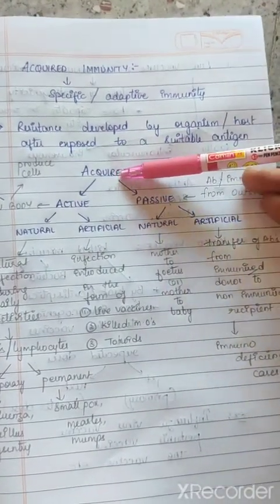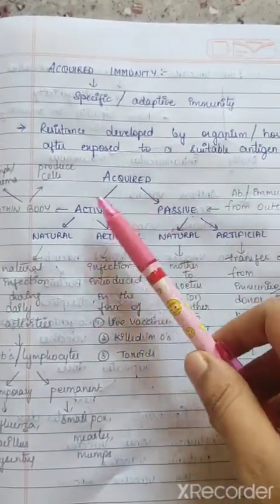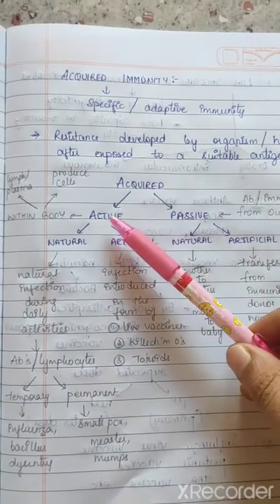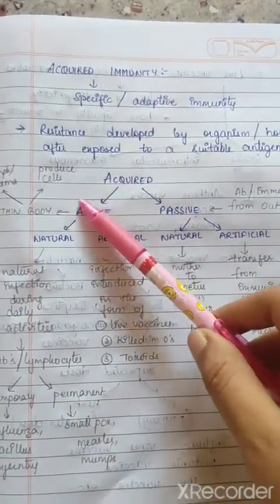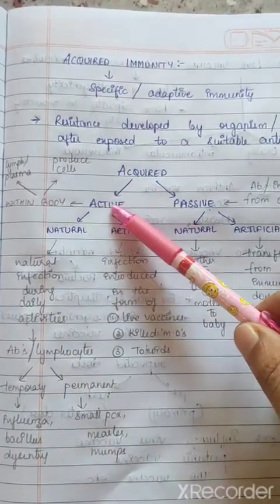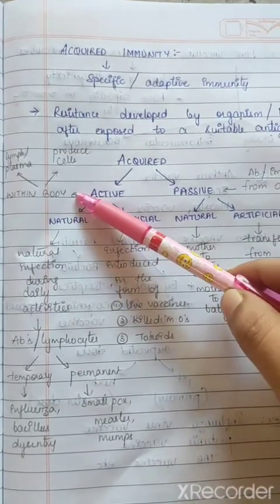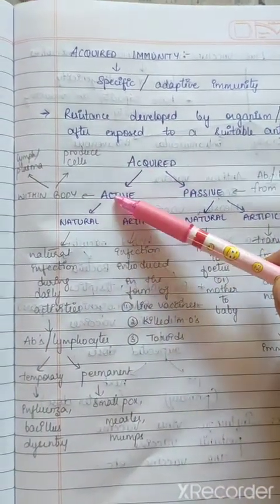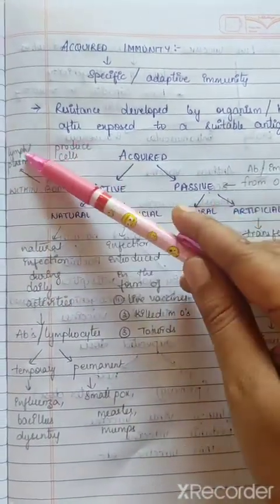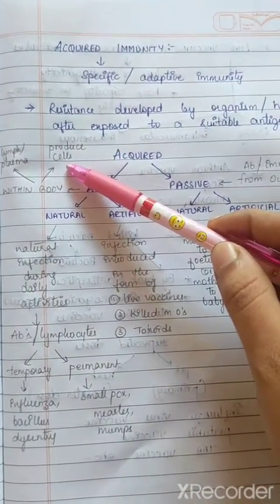Acquired immunity is of two types: active acquired immunity and passive acquired immunity. Active acquired immunity is developed within the body after the entry of microorganisms. When microorganisms enter the body, active immunity produces lymph, plasma, or cells against those microorganisms.